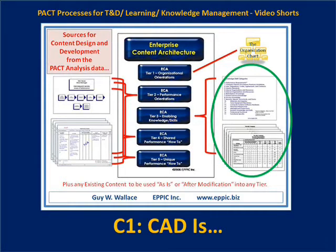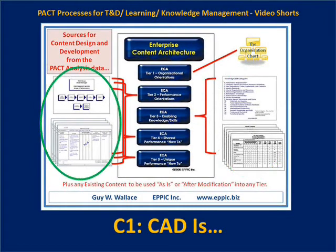Tier three content covers the enabling knowledge and skills — things like laws, regulations and codes, policies and procedures, tools and equipment, interpersonal and personal development skills — that are enablers of terminal performance. Terminal performance is covered in the PACT processes at a tier four or tier five level. In tier four, there are performance how-to sets of content that are shared across more than one target audience.